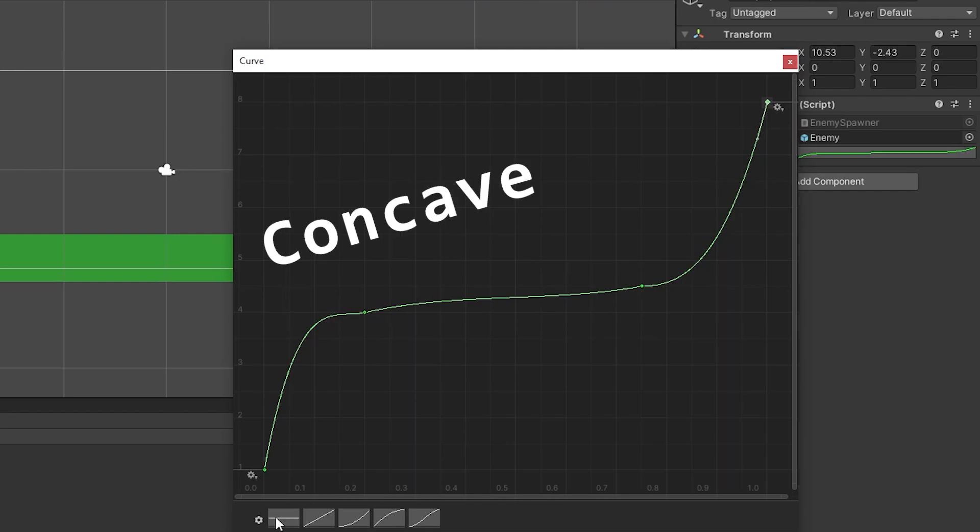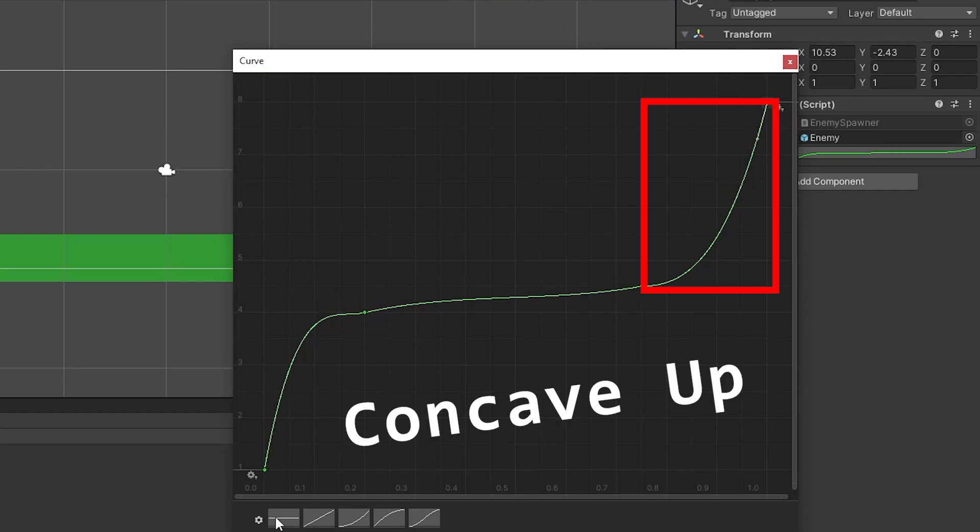This part is what we call concave down, so we get more higher numbers and less lower numbers. After 4, we have a relatively flat section, so a lot of our enemies will be a bit faster than 4. Then it goes concave up, so we have less 8-speed enemies than, say, 5-speed enemies.